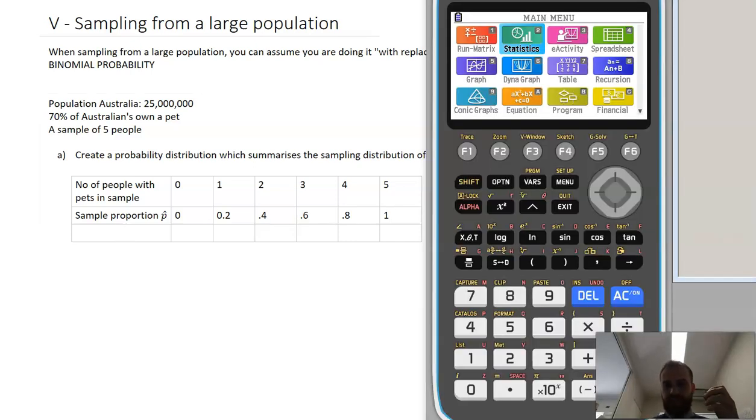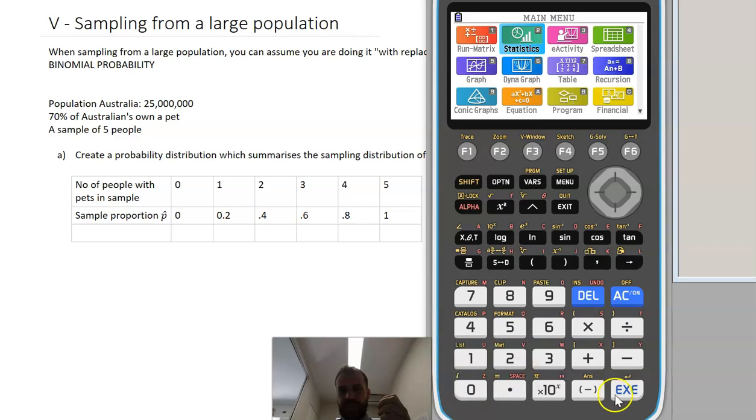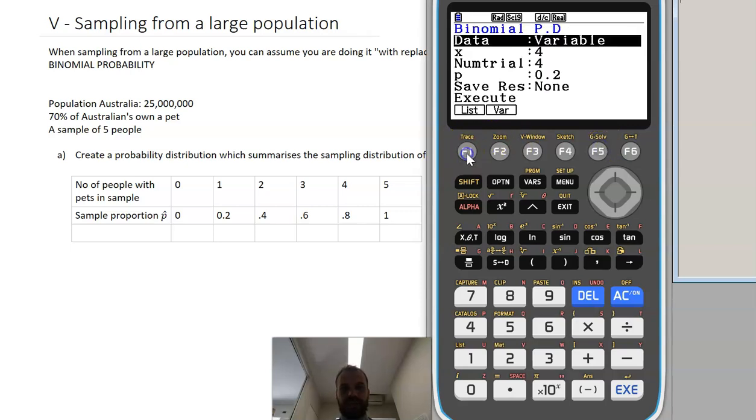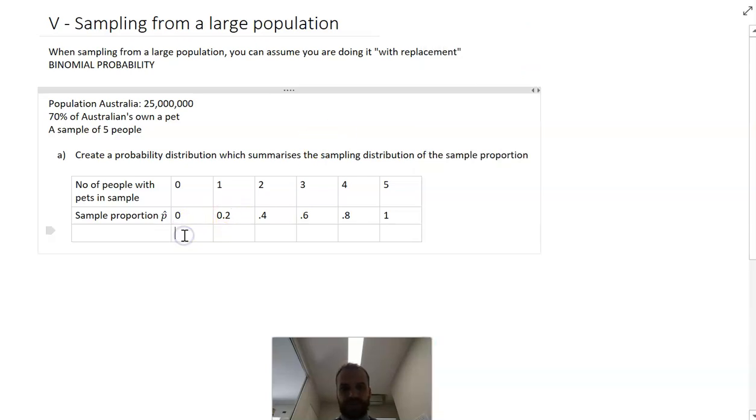Okay. So I'm going to need my calculator now to do this next bit. Stat mode, distribution. This is a binomial. And we're going to do a binomial PD so we can fill in all of this. We're looking for zero successes. A sample of five people. The probability of success is 0.7. And we get 2.43 times 10 to the negative three. So 0.0024.